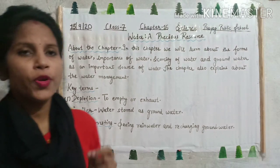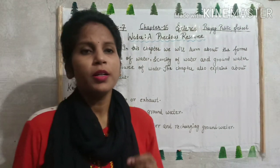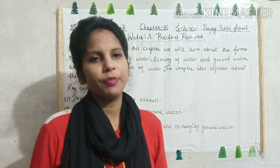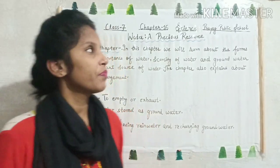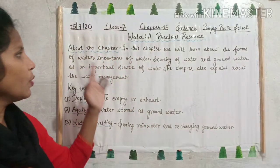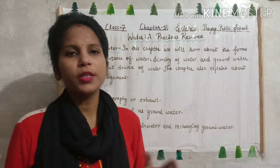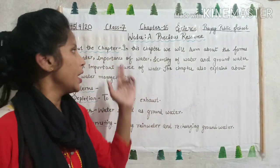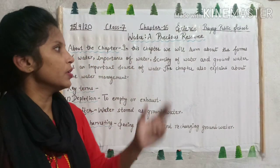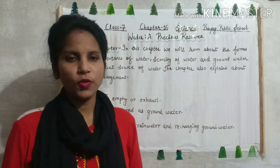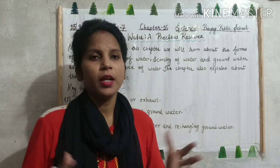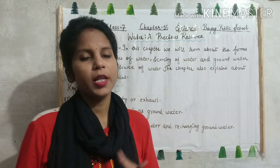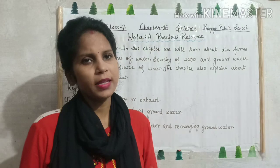First of all you have to write the name of the chapter, number of the chapter and date. Then about the chapter — what is the chapter about? In this chapter we will learn about the forms of water that we have studied. There are three forms of water: solid, liquid and gas.